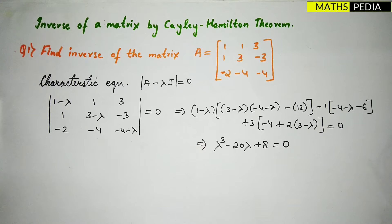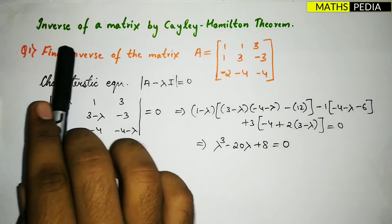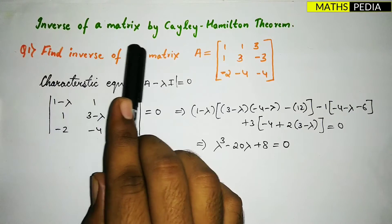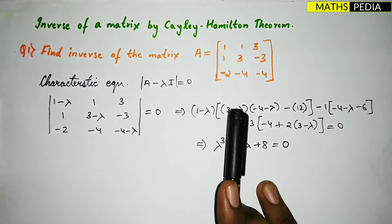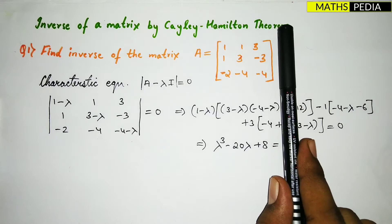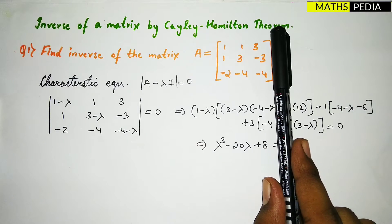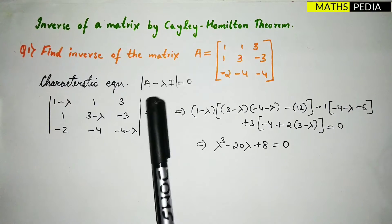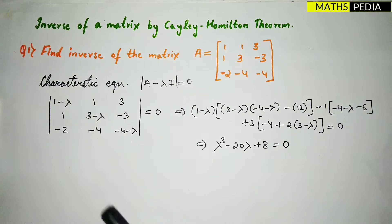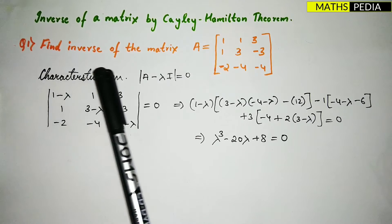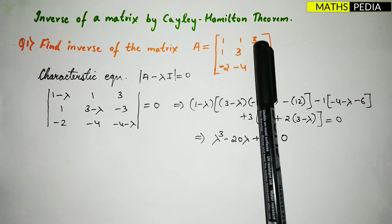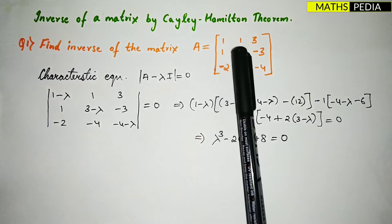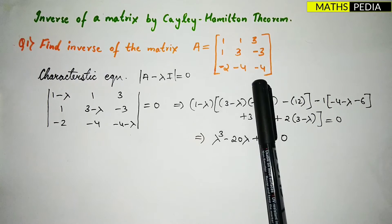In this video we are going to learn how to find the inverse of a matrix by the Cayley-Hamilton theorem. By using this theorem we are going to find the inverse of a given matrix. The question is: find the inverse of the matrix A = [[1, 1, 3], [1, 3, -1], [-2, -4, -4]].